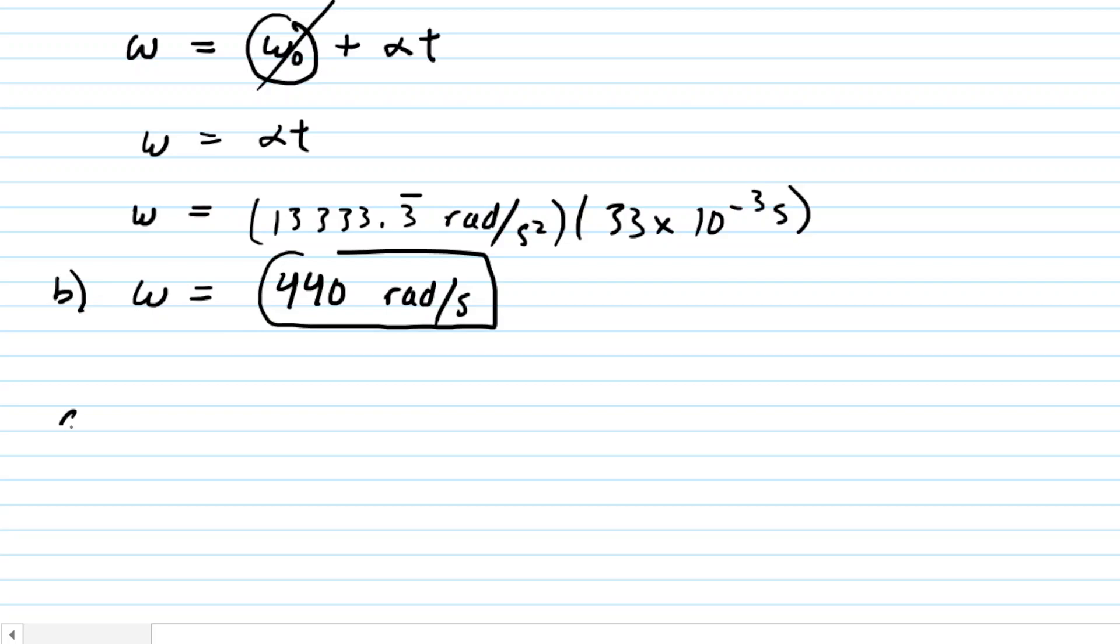Now that we have that value, we can head back to part A and easily calculate the angular momentum, because the angular momentum equals the rotational inertia multiplied by that angular velocity. That is analogous to saying that the linear momentum of an object equals its mass times velocity. Let's plug in the values given and calculated for I and omega.